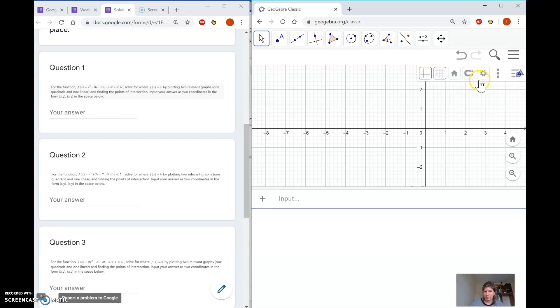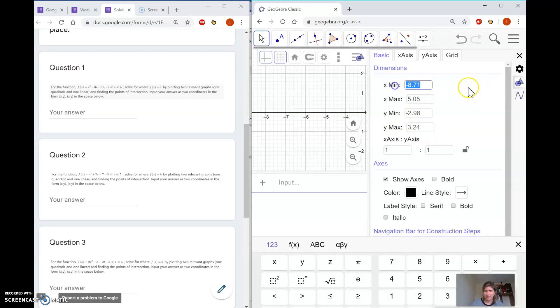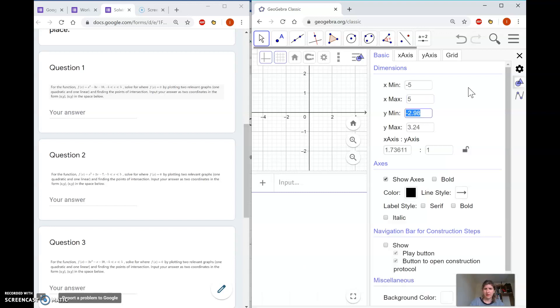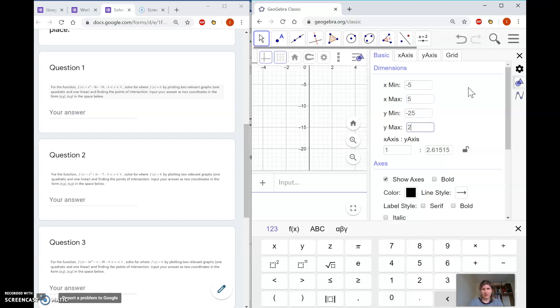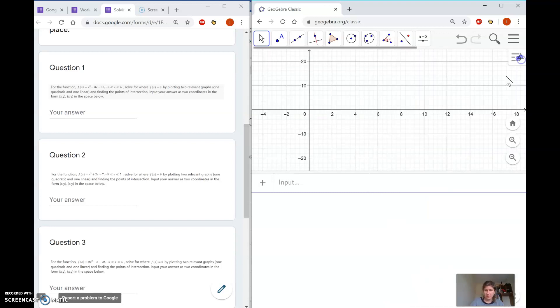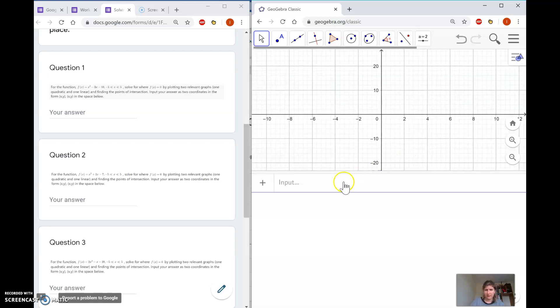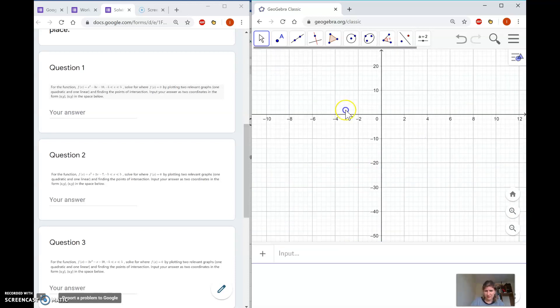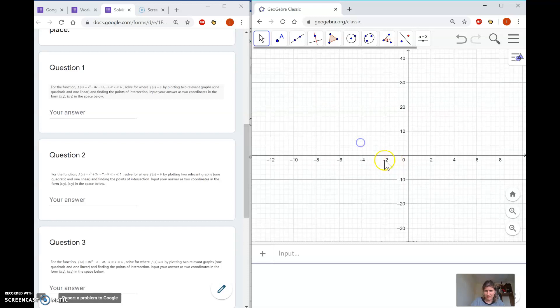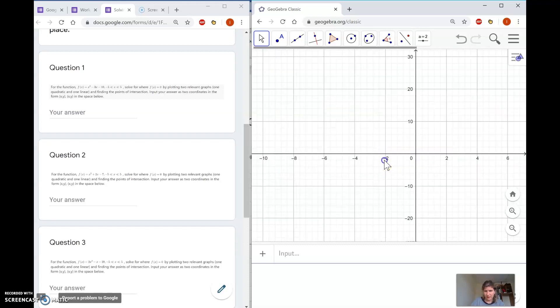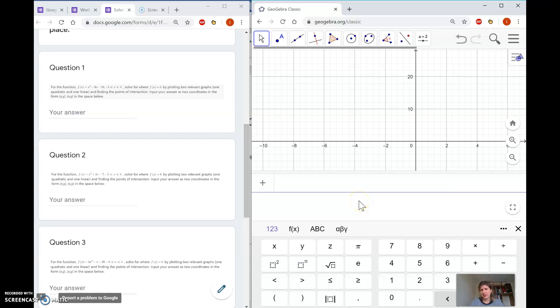Next, I'm going to set up this axis from negative 5 to 5, and from negative 25 to 25. I'll make this a little bigger and zoom in. You should be able to see the points now. You can set up your screen however you want. You'll notice my input bar is down at the bottom here. Yours might be on the side, and you can move it around if you want.